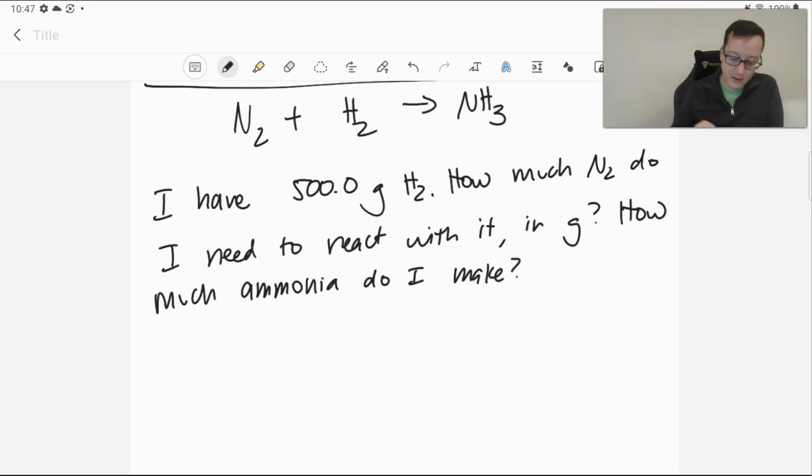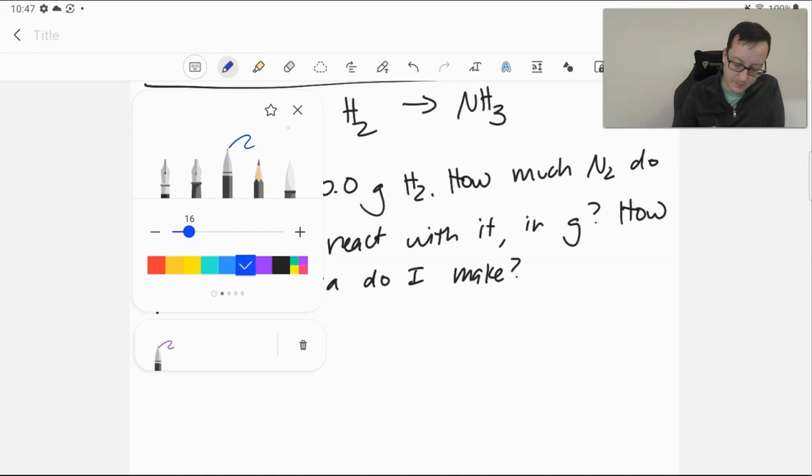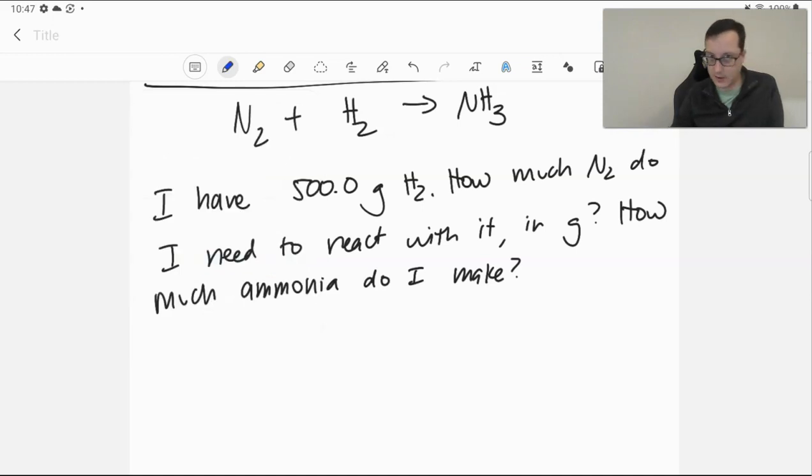We can approach this problem using what is called stoichiometry. And stoichiometry is how we relate chemical substances to each other quantitatively using their chemical reaction. I want you to balance this equation. Try your balancing skills. Pause the video, balance it, and come back.